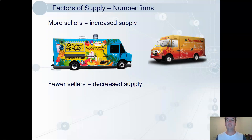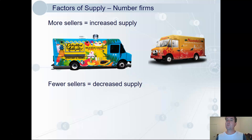The number of firms in a market will affect supply. For example, there was a time when there were only a few food trucks in Adelaide — supply was low. Then they saw the opportunities for profit and supply increased rapidly; now we've got countless.